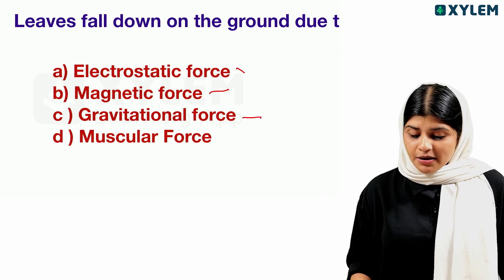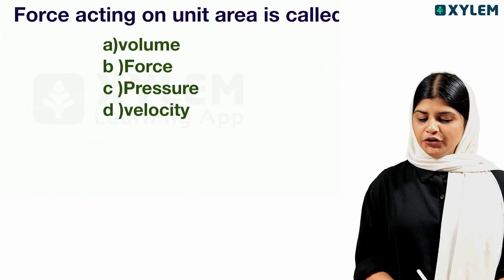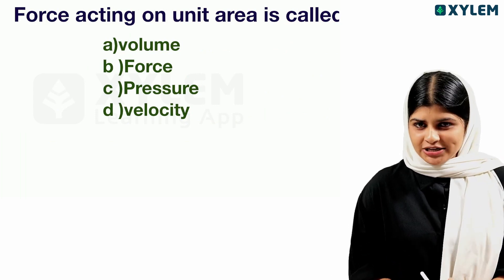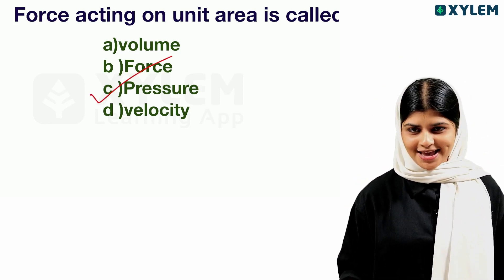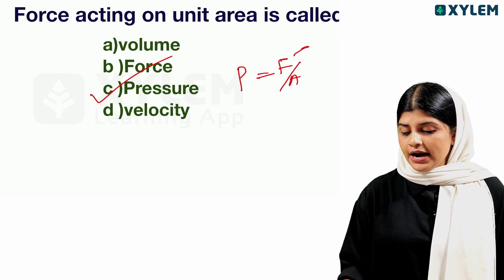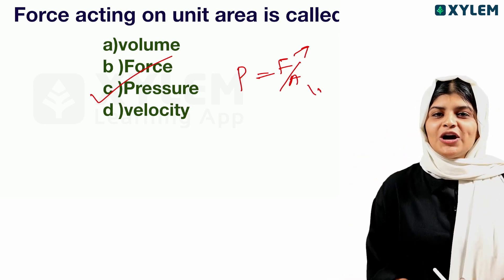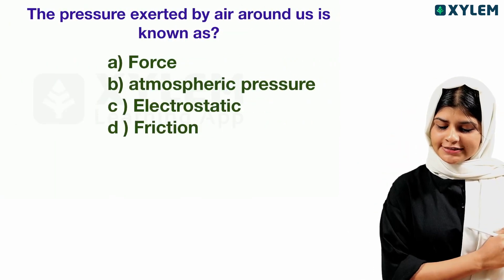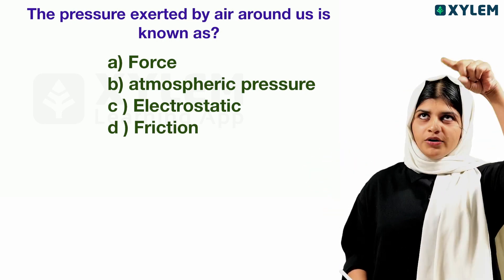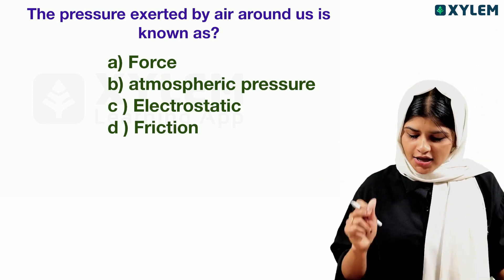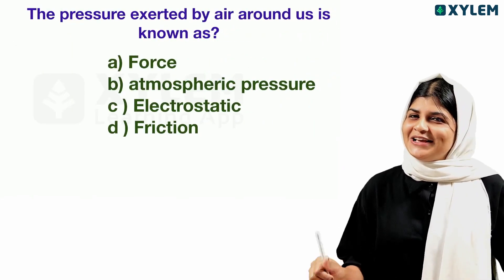The force acting on unit area is called pressure. In the book, pressure is equal to F divided by A — F for force, A for area. So pressure equals force divided by area. The pressure exerted by air around us in the atmosphere is known as atmospheric pressure.